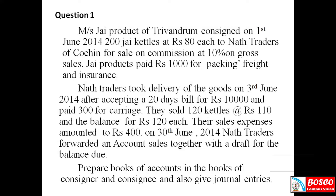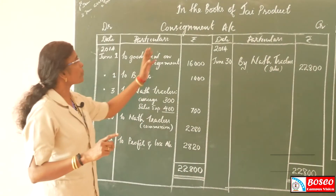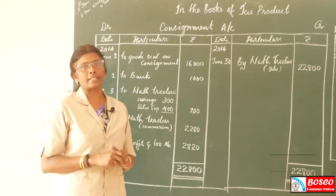The balance kettis were sold for Rs. 120 each. Their sales expenses amounted to Rs. 400. On 30th June 2014, North Traders forwarded an account sale together with a draft for the balance due. We need to prepare account sales rendered by North Traders and also give journal entries and ledger accounts in the books of J. Products and North Traders. In this problem, the two parties are J. Products and North Traders.